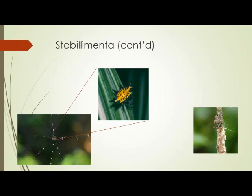Gasteracantha cancriformis arranges its stabilimentum differently — in tufts along some of its silken threads so that it actually looks like dashed lines. Trinidad has yet another stabilimentum-building spider of the genus Cyclosa. It builds its stabilimentum — a ribbon stabilimentum — and covers it in detritus such as dry leaves, feces, or old exoskeletons. It then places itself roughly in the middle at the hub. Being brown in color, it blends in with the detritus, so in this case the detritus stabilimentum provides it with camouflage.